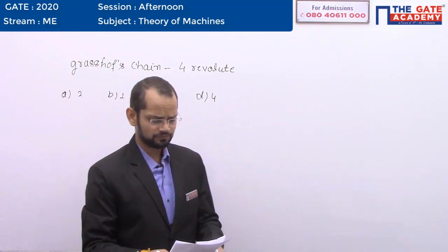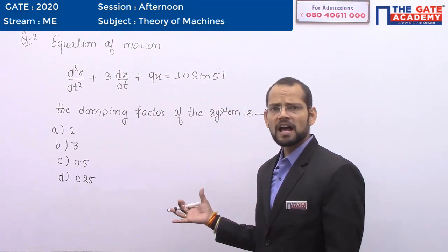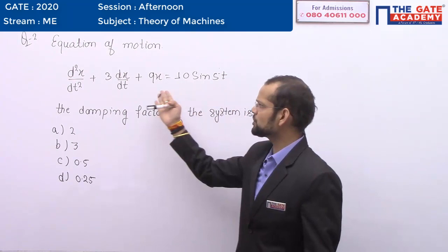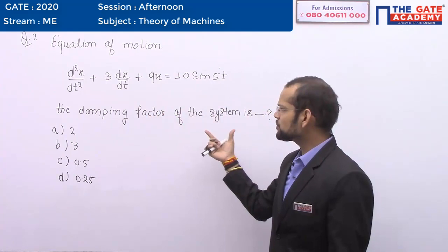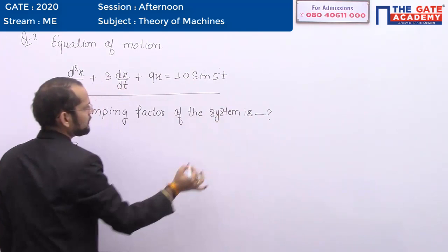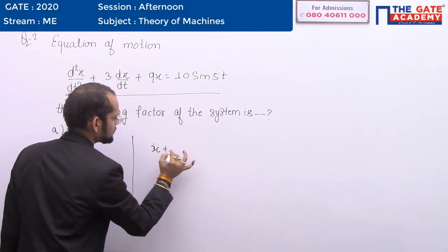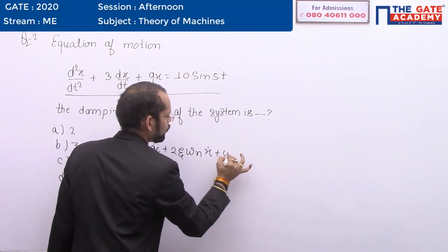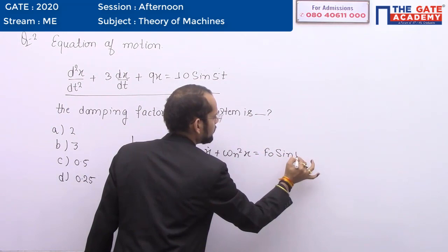The second question: the equation of motion for a spring-mass-damper system was given. We can conclude that this equation is related to forced damped vibration. The question asks for the value of the damping factor for the given system. The standard form of the equation of motion for a forced damped system is: x-double-dot plus 2ζωₙ x-dot plus ωₙ² x = f₀ sin(ωt).